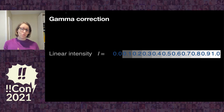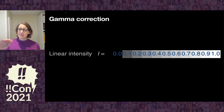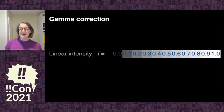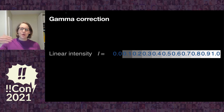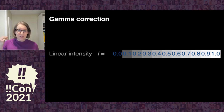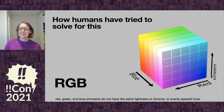So a couple of things we can do to fix these. The first is gamma correction. This is linear intensity, but to my eyes and likely to yours, the step between 0.0 and 0.1 seems to be a lot bigger jump than from 0.9 to 1.0. So if we scale intensity on a logarithmic scale, we can get it to look linear to our eyes, even though it actually isn't.